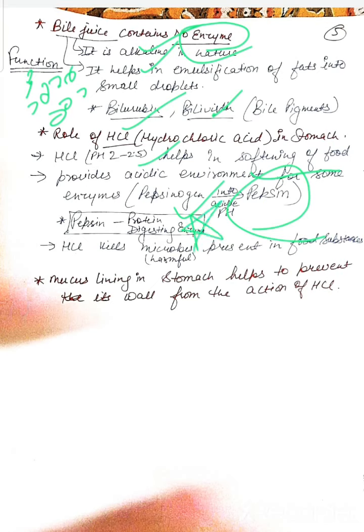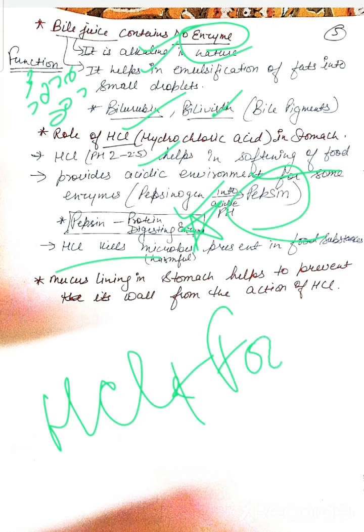Pepsin also kills harmful microbes present in food substances. Mucus lining prevents the wall of stomach from the action of HCl. When HCl is mixed with food, we call it chyme.